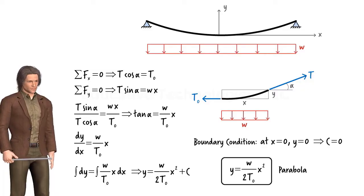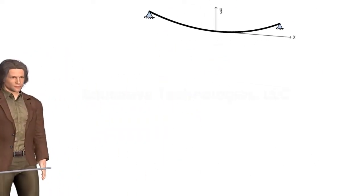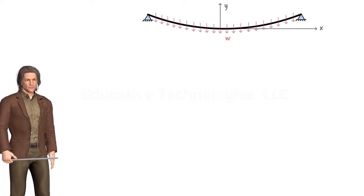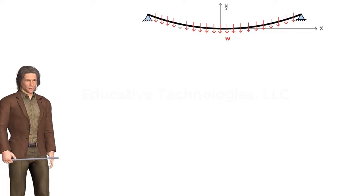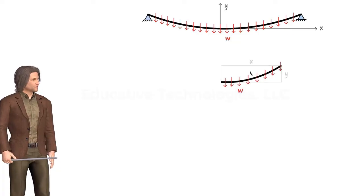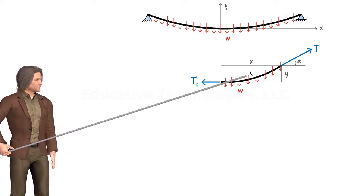Now let's consider the case in which the cable hangs freely under its own weight. Note that the weight of the cable is not distributed along the X axis. Rather, it is distributed along the arc length of the cable. The free body diagram for the segment of the cable to the right of the origin can be drawn this way, where the arc length of the segment is denoted by S.